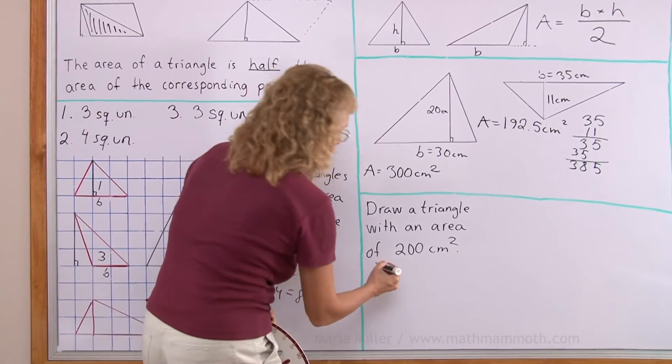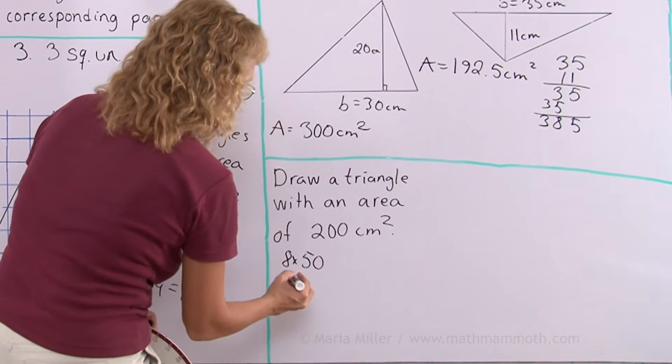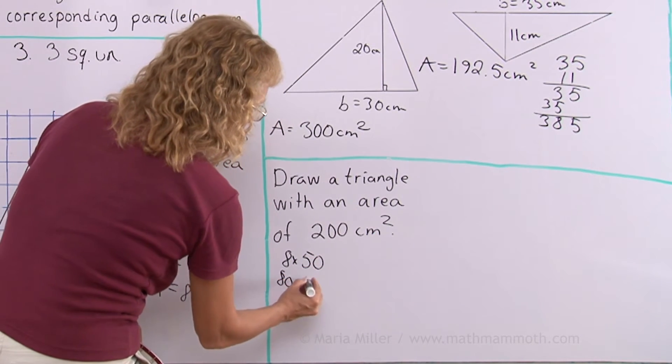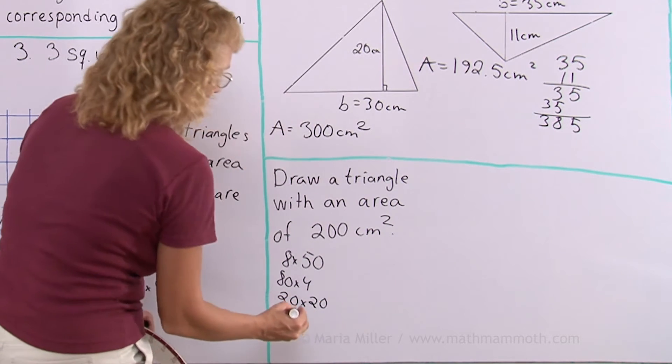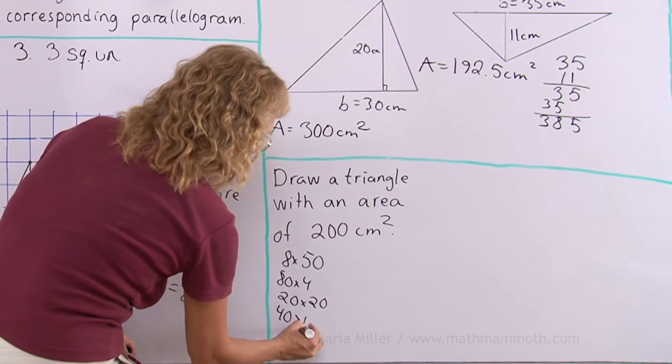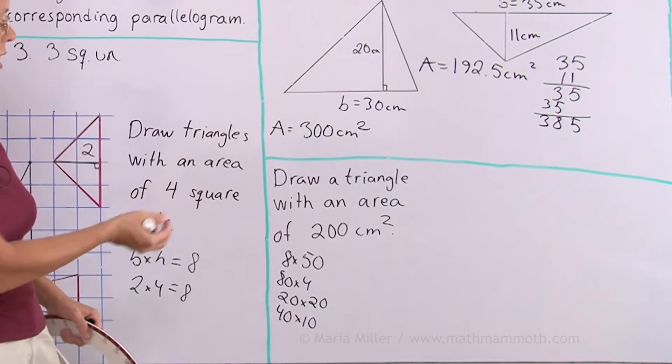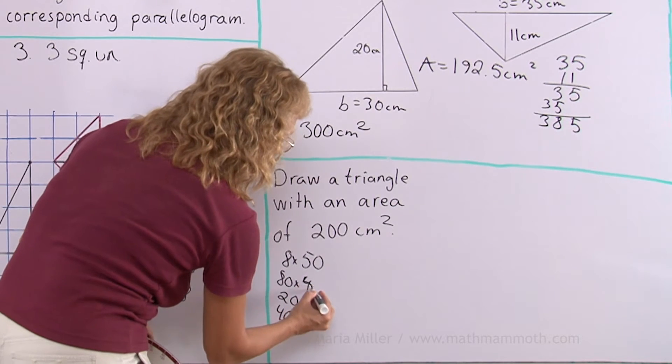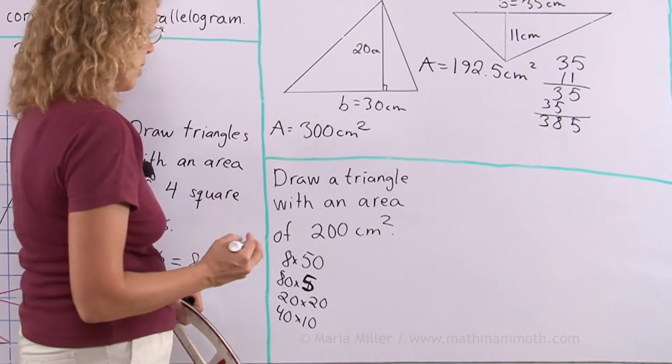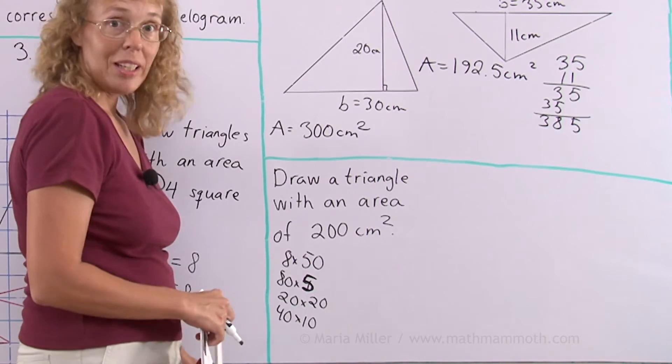For example, 8 times 50 would be 400. Or 80 times 5. Or 20 times 20. Or 40 times 10. You see how many possibilities? There's tons of possibilities for this. Let me try 20 and 20.